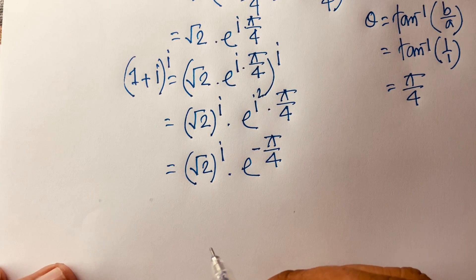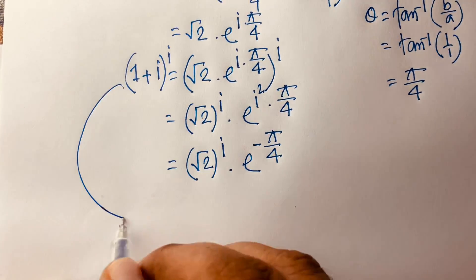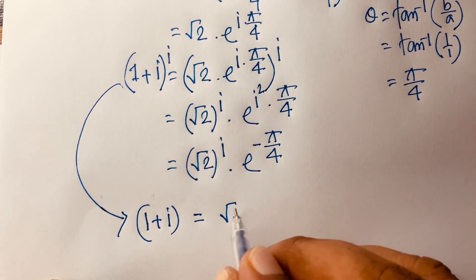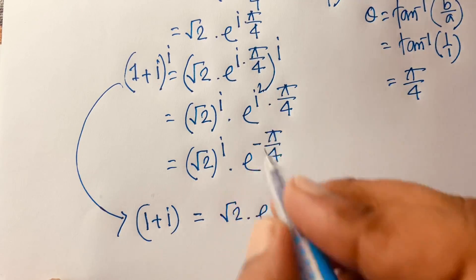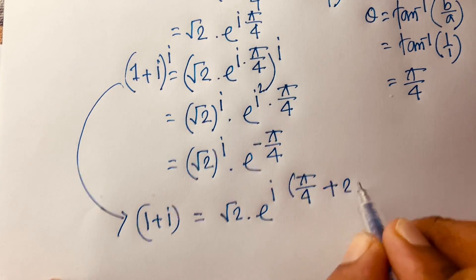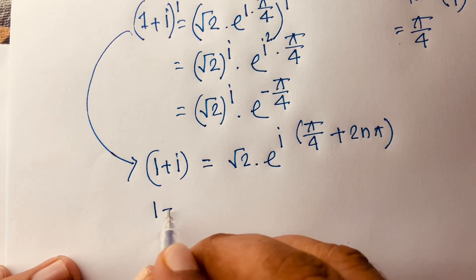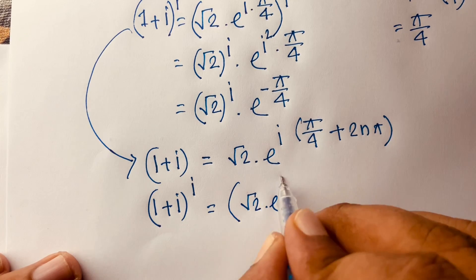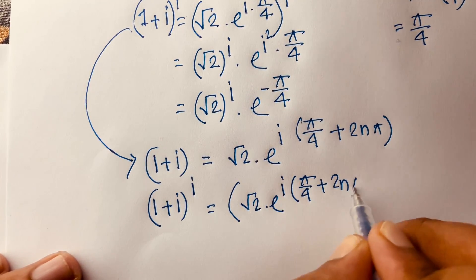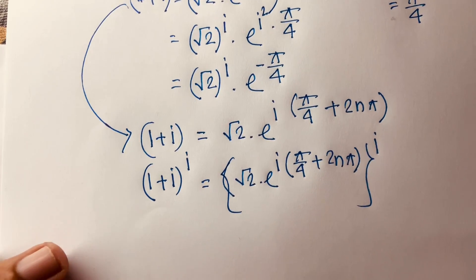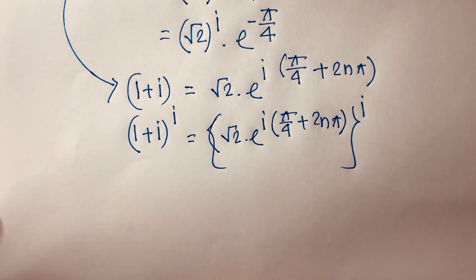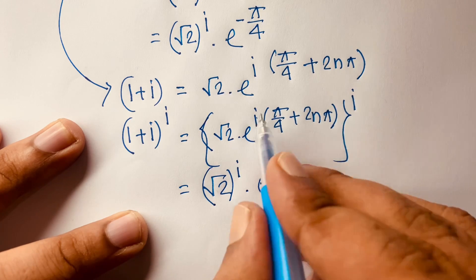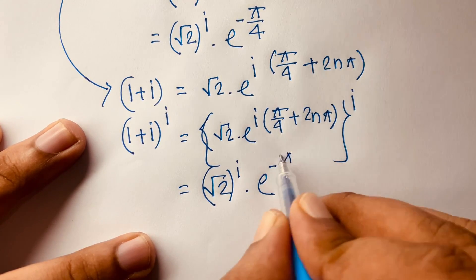For the general form, we write 1+i = √2·e^(i(π/4 + 2nπ)). Raising both sides to the power i: (1+i)^i = (√2·e^(i(π/4 + 2nπ)))^i = (√2)^i · e^(i²·(π/4 + 2nπ)) = (√2)^i · e^(-π/4 - 2nπ).